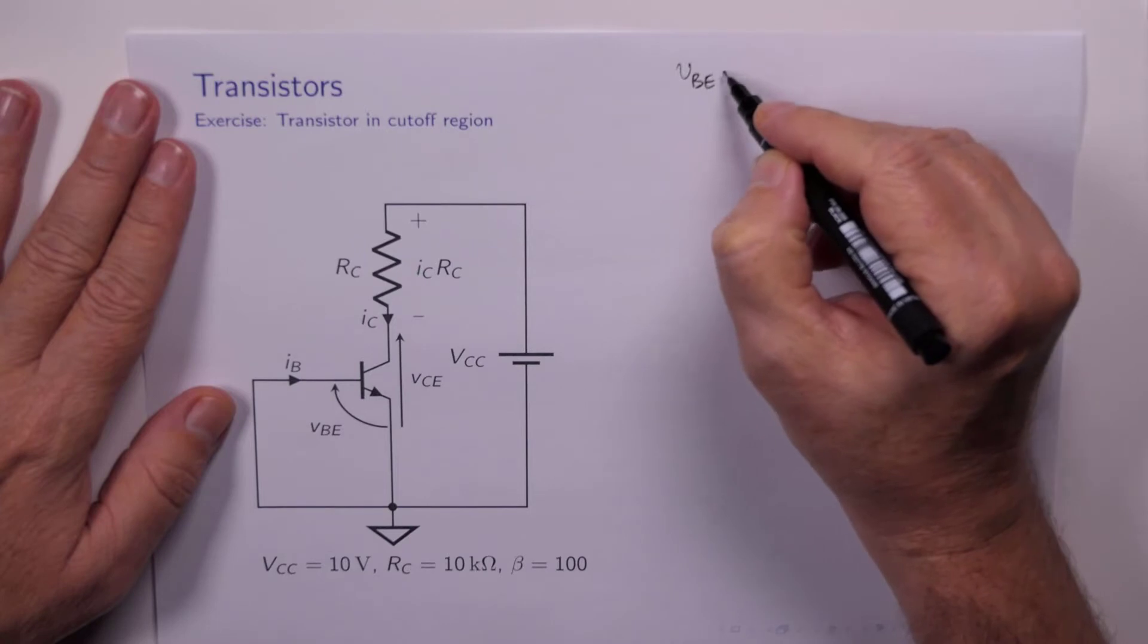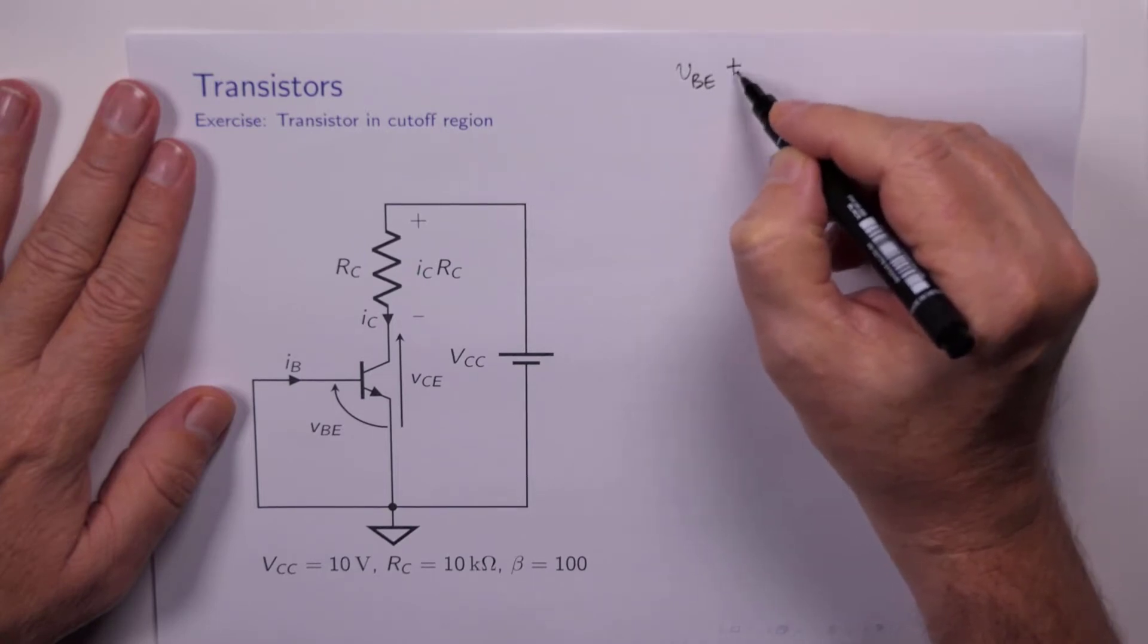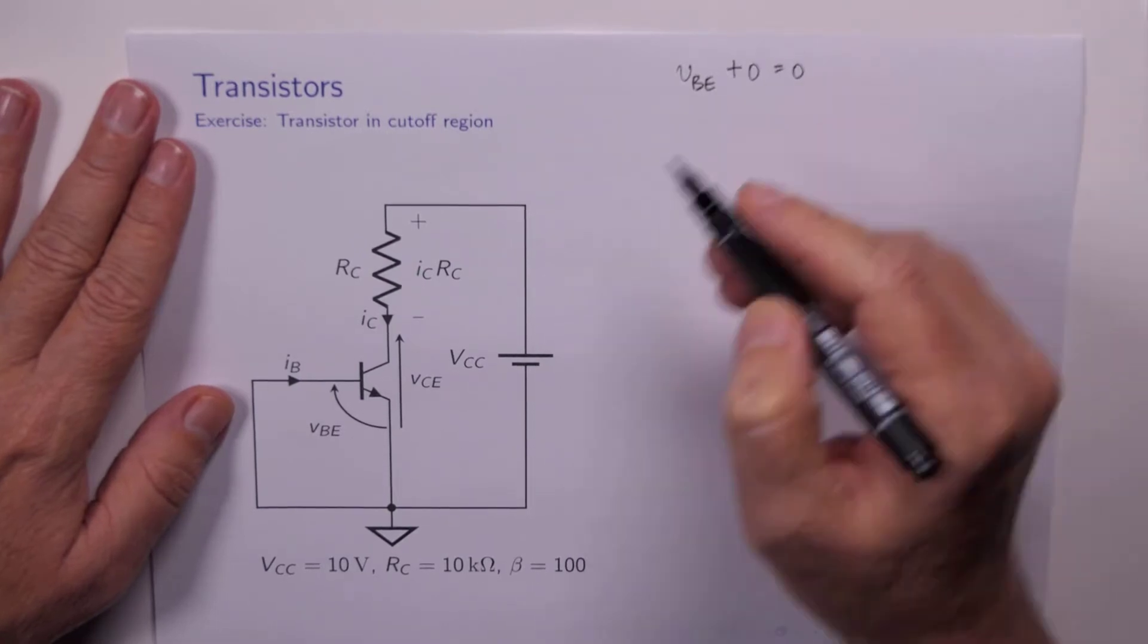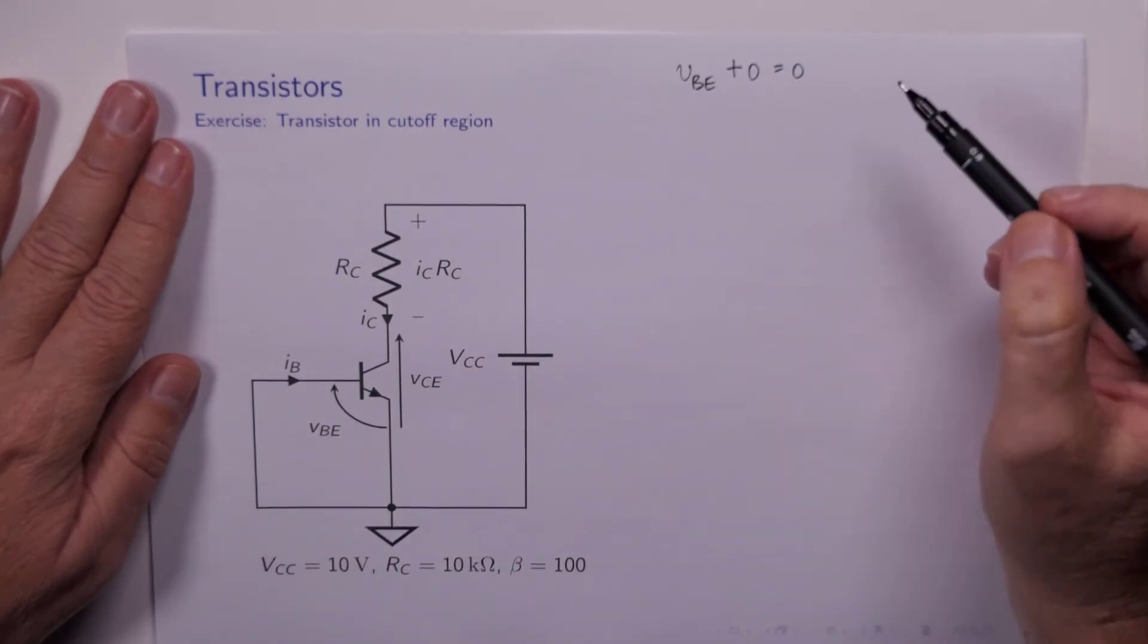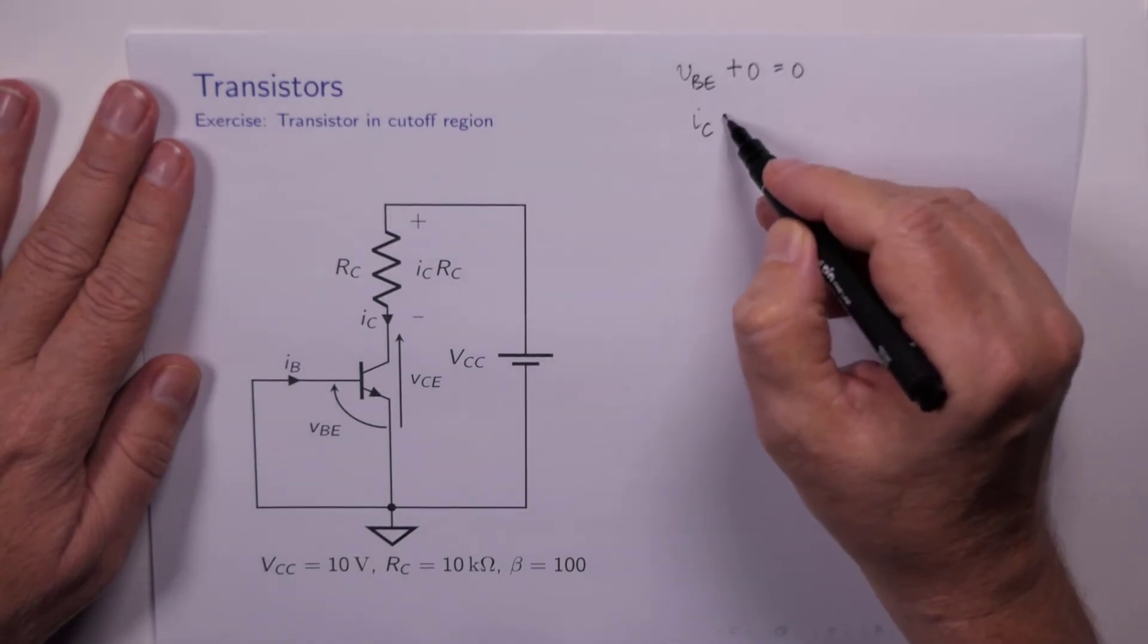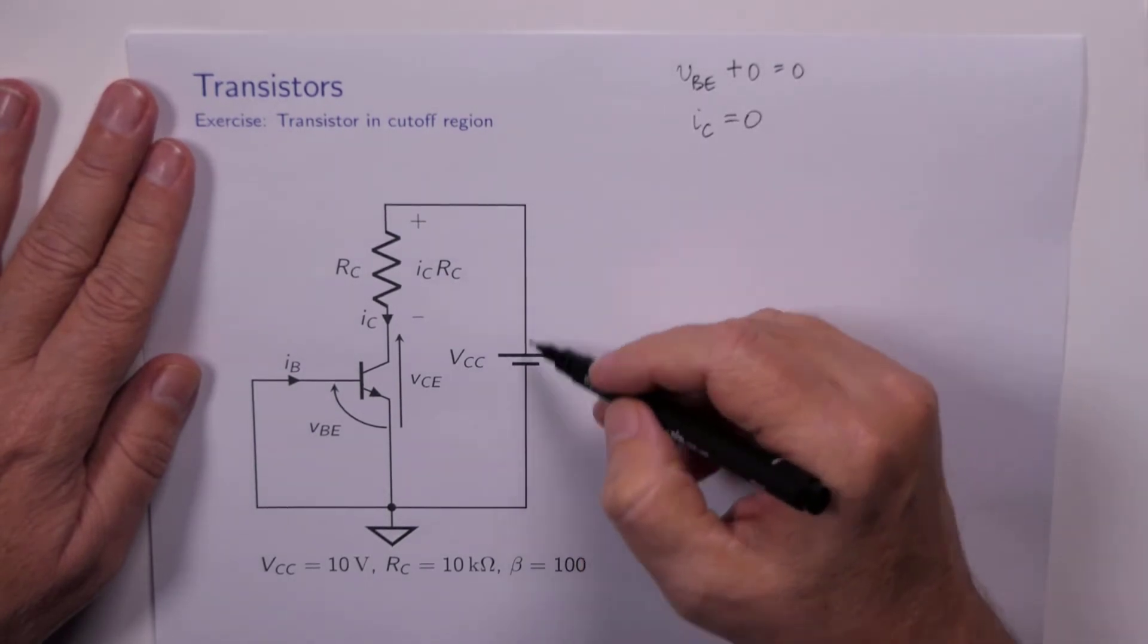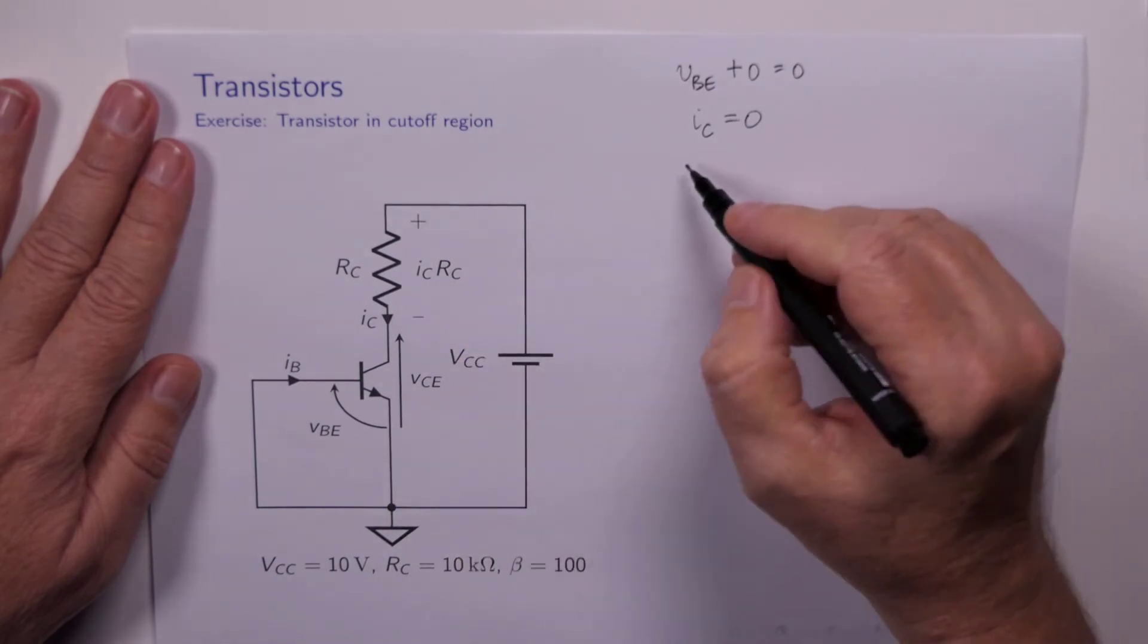There's not much to it, VBE plus 0 equals 0, there's just nothing there. So VBE is equal to 0. So that means IC is equal to 0.